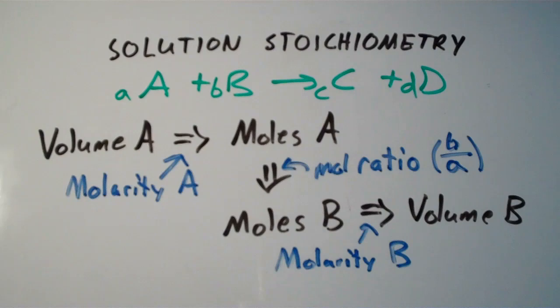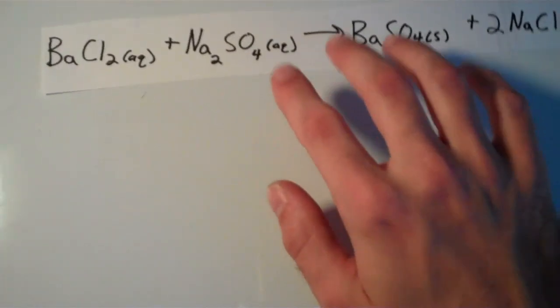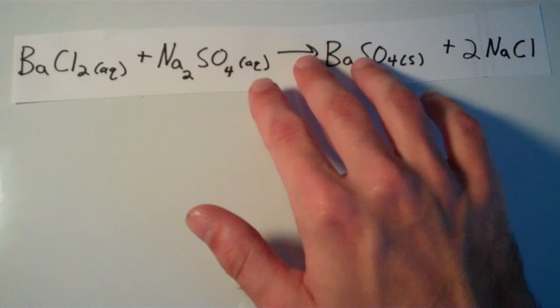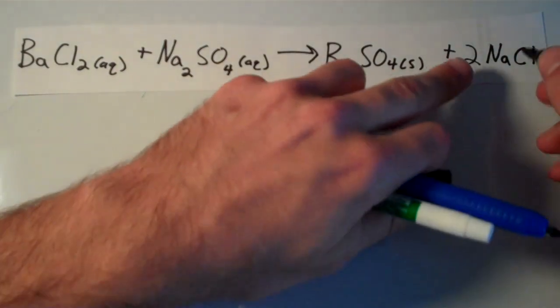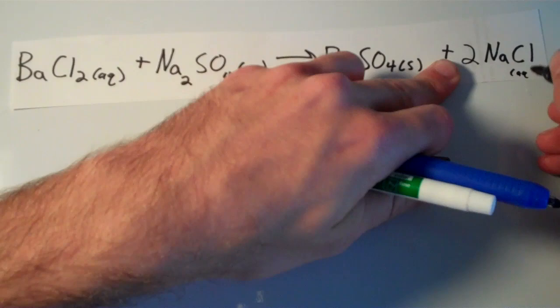So this is what a typical solution stoichiometry problem looks like. So let's go through an example that you may encounter on an exam or something like that. So suppose I have the following chemical equation. I have BaCl2, that's aqueous, plus Na2SO4, that's also aqueous, yields BaSO4, which is solid, plus 2 NaCl. And I forgot to include it, but this is also aqueous.